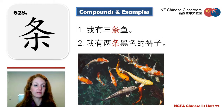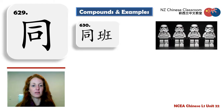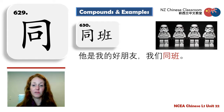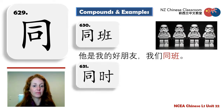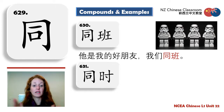同 — same. 同学 means classmate — people in the same class. Example: 他是我的好朋友，我们在同一个班 — He is my good friend, we are in the same class. And 同时 — at the same time, since 时 relates to time, like 时间 or 时候.